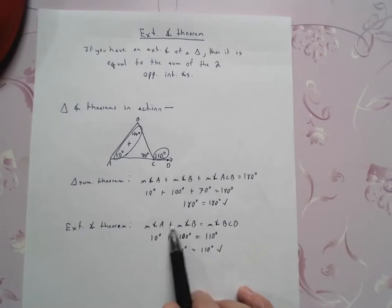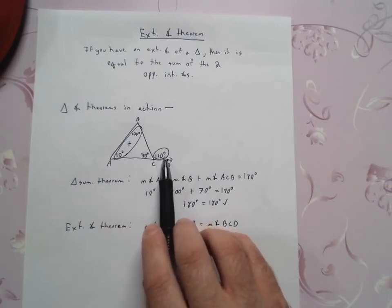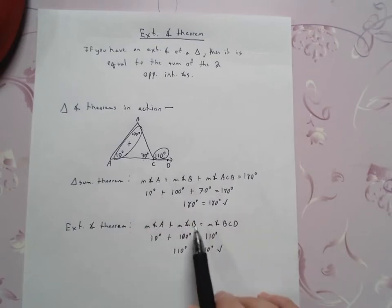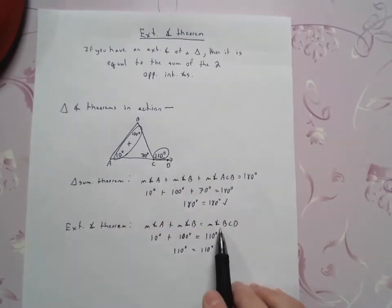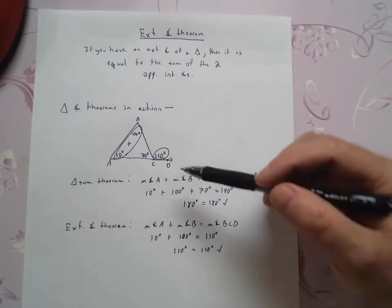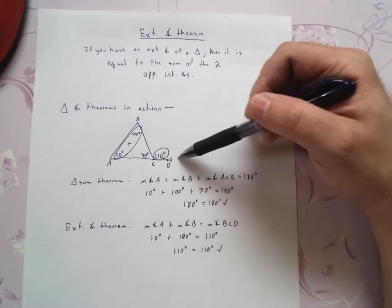If I take the measure of angle A, measure of angle B, because those are the angles that are opposite this guy, not adjacent with it. The angles opposite this guy right here. If I add those together, it should give me the measure of angle BCD right here. BCD, that's my exterior angle.